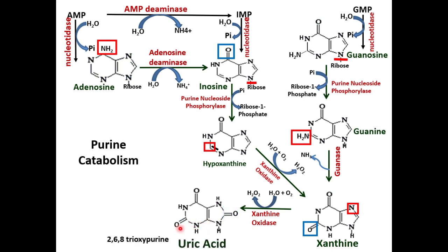The structure of uric acid is 2-6-8-trioxypurine. In inosine it was oxy at the 6th position; after deamination it becomes oxy at the 6th position. In xanthine it becomes 2-6-dioxy, and then further with xanthine oxidase it forms 2-6-8-trioxypurine (uric acid). Importantly, the xanthine oxidase reaction also produces hydrogen peroxide (H2O2), which is harmful to tissues. Catalase cleaves H2O2 into water.